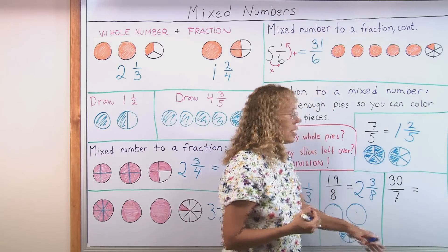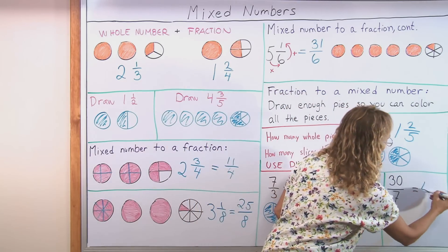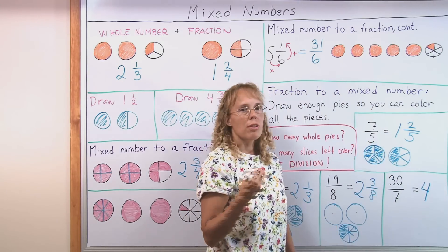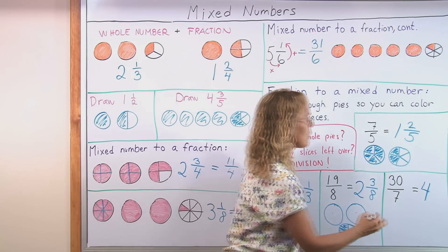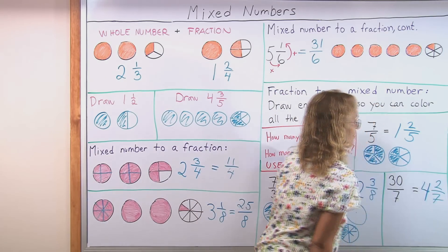So therefore we will need 4 whole pies full of sevenths. And then the 2, the remainder, means that 2 slices left over in the fifth pie. So it is 2 sevenths.